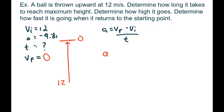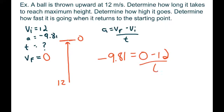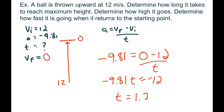Plugging into A = (VF − VI) / T: −9.81 = (0 − 12) / T. Bringing T up: −9.81 × T = −12. Dividing: −12 / −9.81 gives a time of 1.22 seconds. Rounding to two significant digits, it takes 1.2 seconds to reach the top.